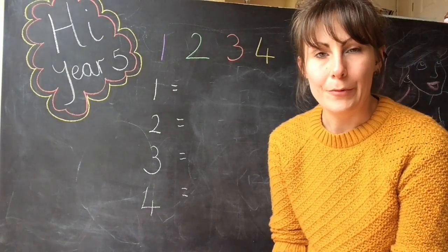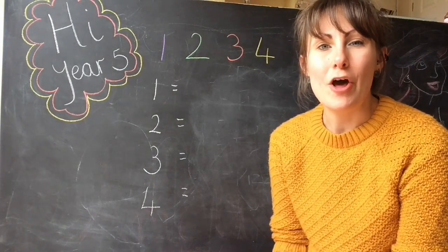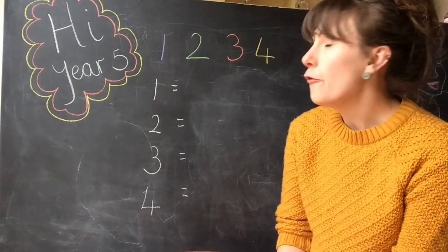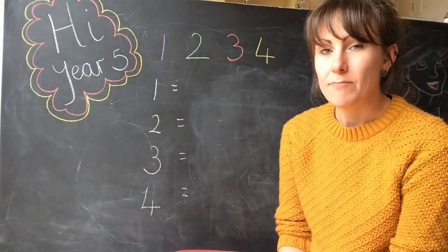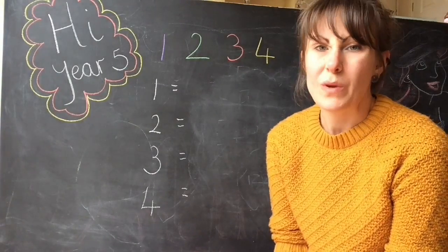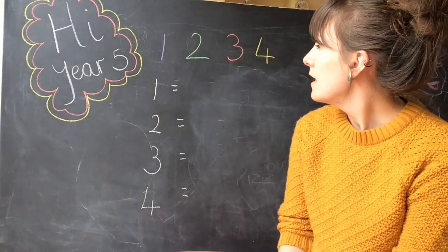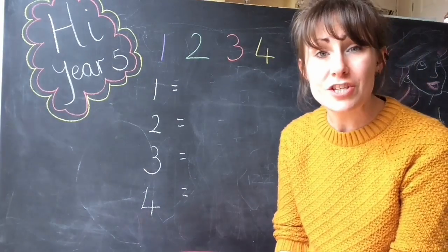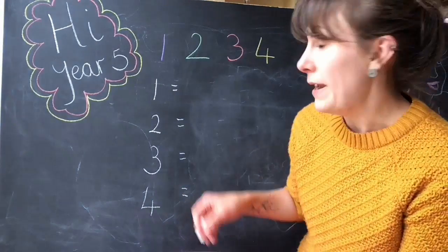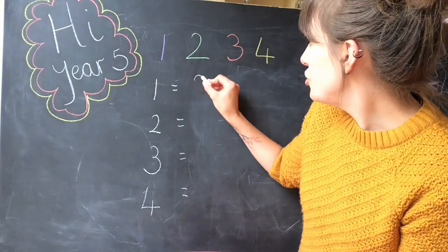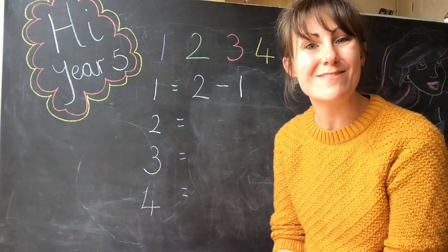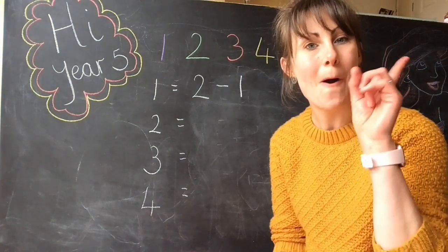So for example, let's have a look at how we would make 1. We've got four numbers but we don't need to use all of them, so we can make that choice. My first idea to make 1 would be very simply 2 take away 1, and that gives me my number 1.